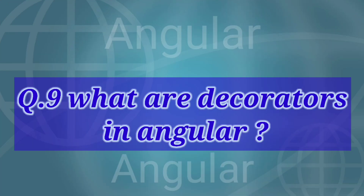The next question is: what are decorators in Angular? Decorators are a design pattern or function that define how Angular features work. They are used to make prior modifications to a class, service, or filter. Angular supports four types of decorators: class decorators, property decorators, method decorators, and parameter decorators.